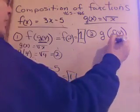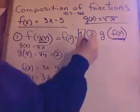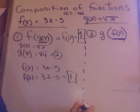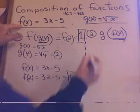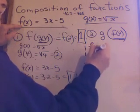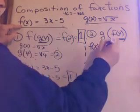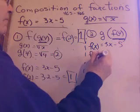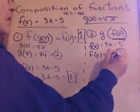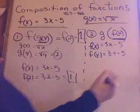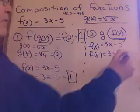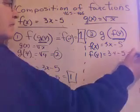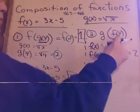Here we go. g of f of 4. So, go to the innermost function and do that one first. I need to do f of 4 with the f of x equation. I'll write down the f of x. It equals 3x minus 5. Now, I'm going to figure f of 4. That means 3 times 4 minus 5. 3 times 4 is 12. 12 minus 5 is 7. So, f of 4 is 7.